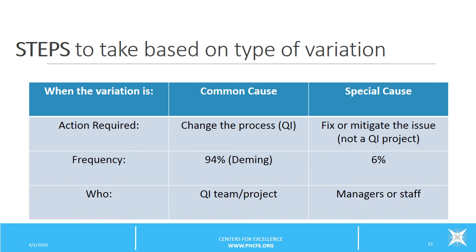In contrast, on the left is special cause variation. If the cause of variation is special, then the action to take is to fix or mitigate the issue detected by the data. It's not a QI project. Special cause variation represents about 6% of all the variation we see in our processes.